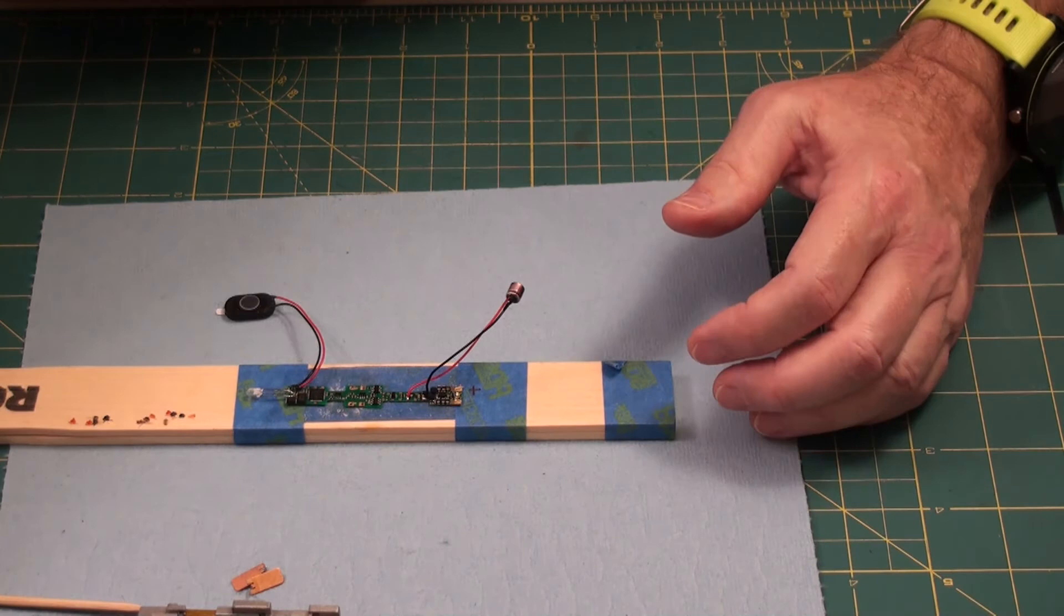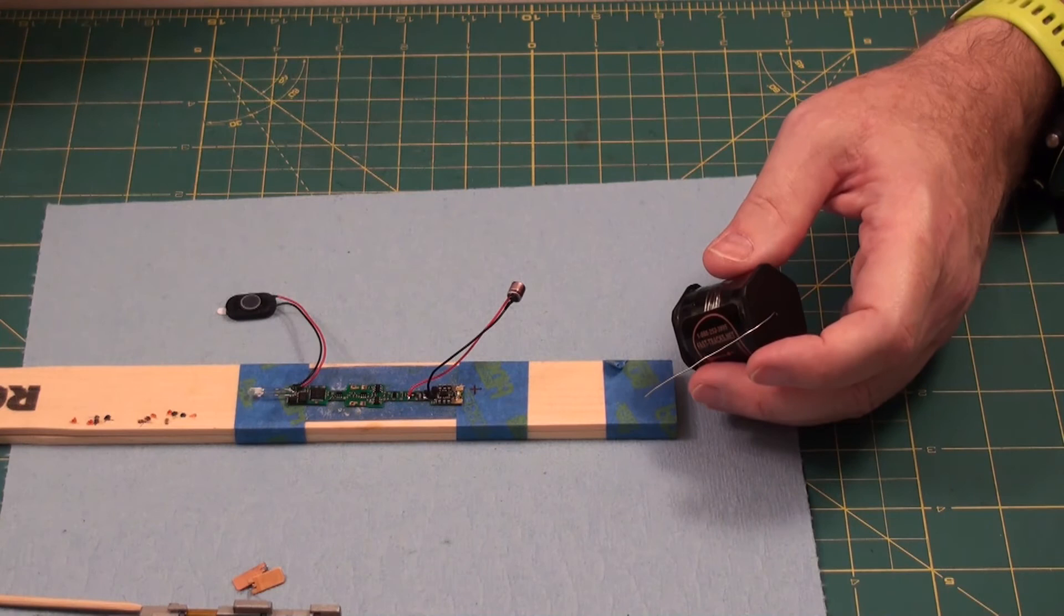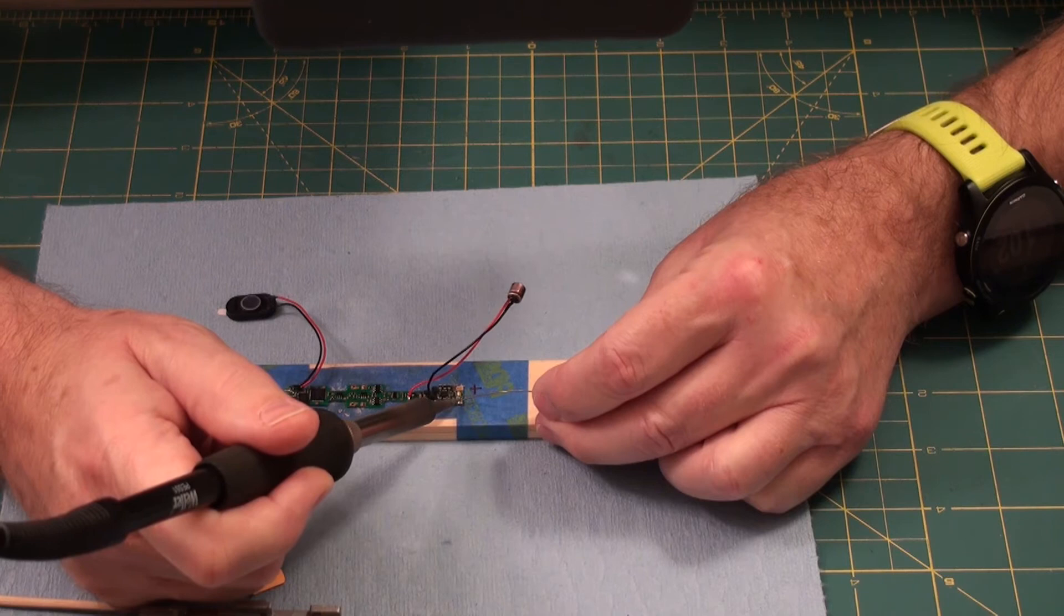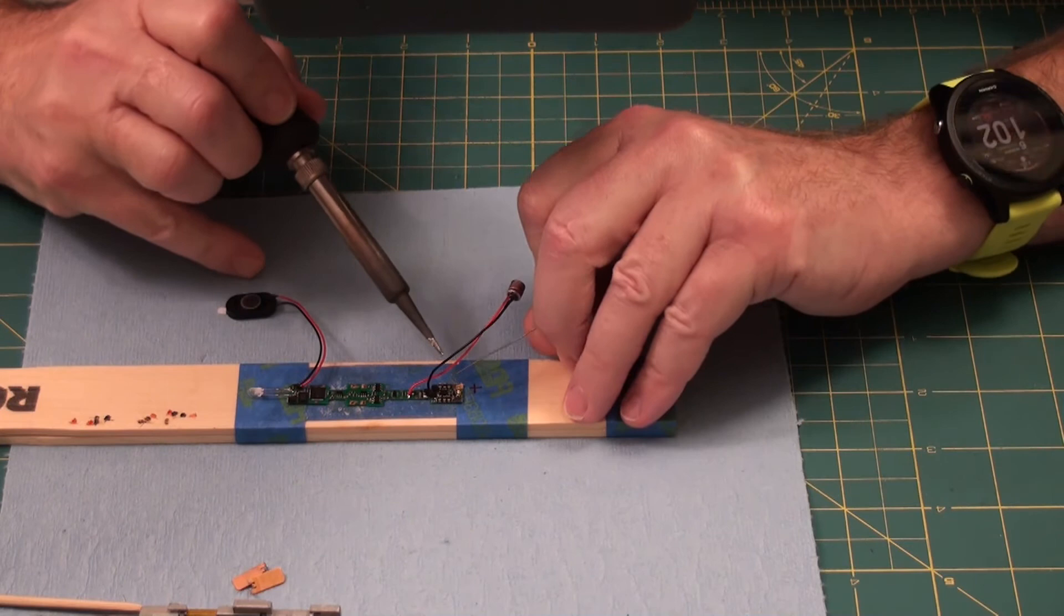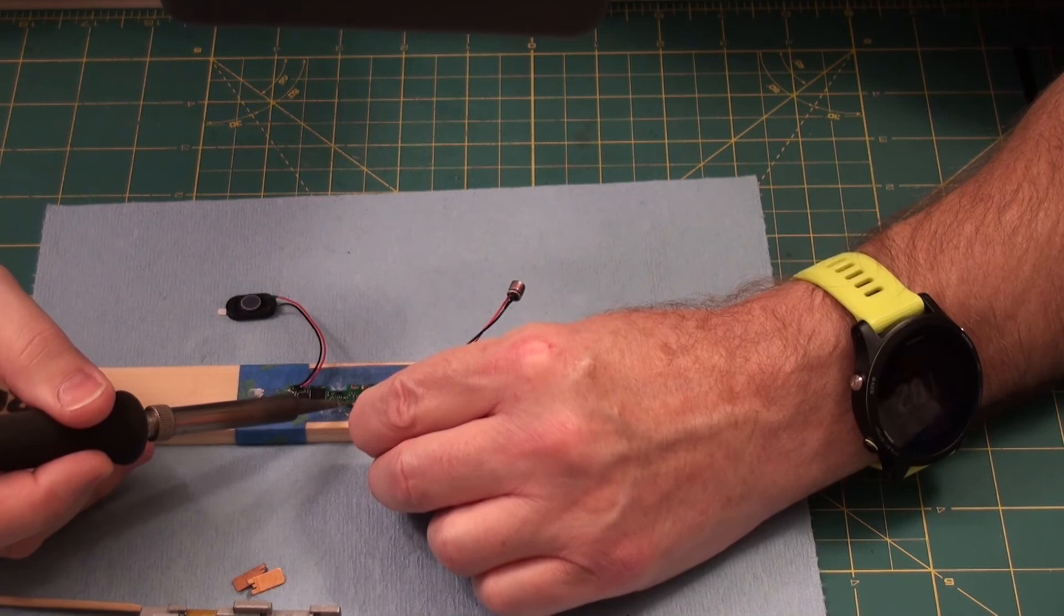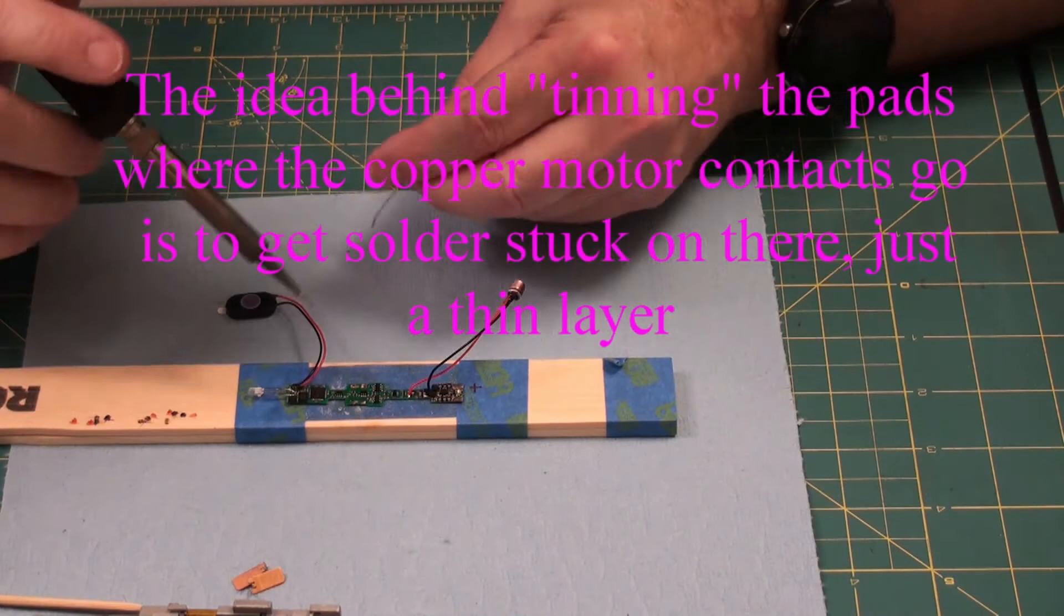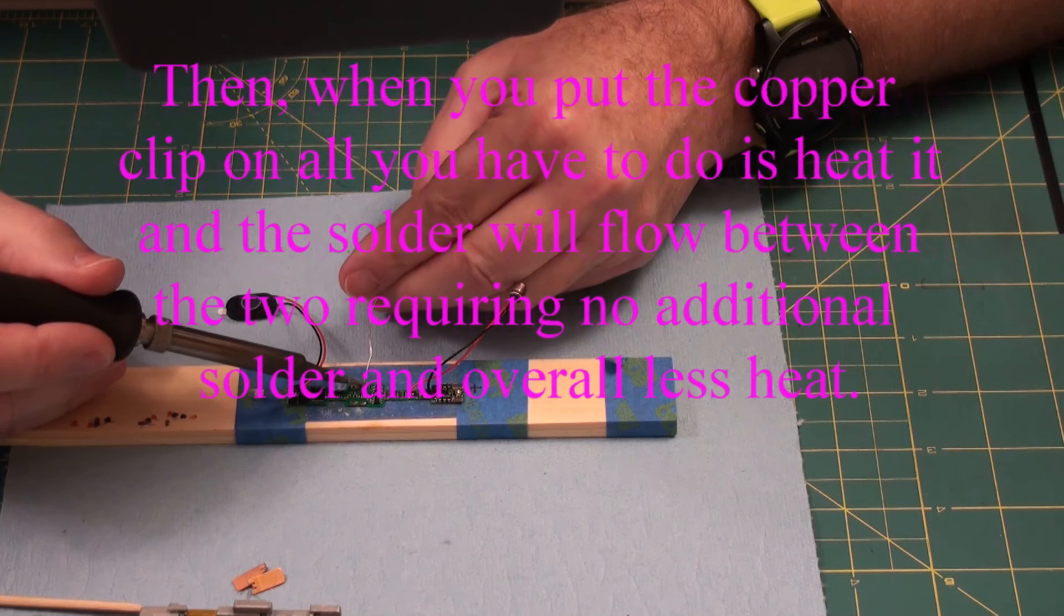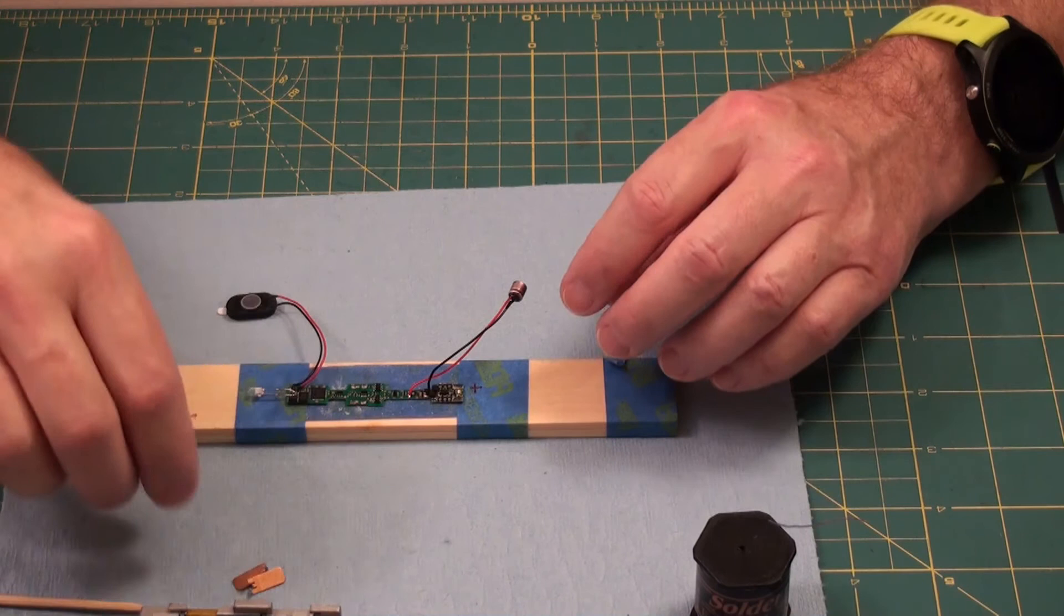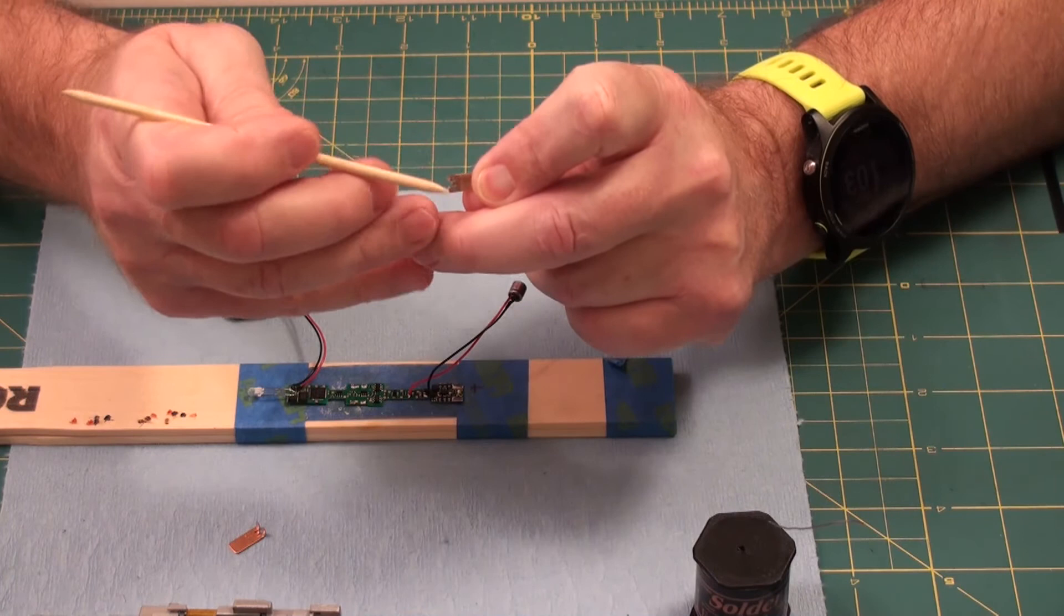Now be careful when you solder on these front guys here because if you get too much on then it's hard to insert. So let's just get a little bit. Don't touch any other components. And that's enough on there. Let's do these guys. Yeah. Just one little bit on it.